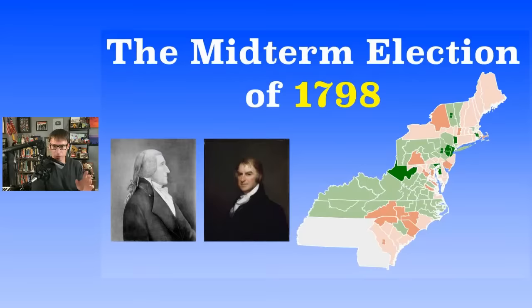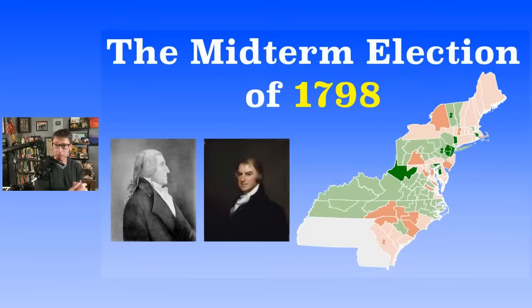In the Senate, there were 32 seats; 17 were needed for a majority. The Federalists actually gained one seat, so they had 23 after these elections, and the Democratic-Republicans lost a seat — they had nine. In the House, the Federalists won as well, gaining three seats; voter turnout seemed higher in New England. The Democratic-Republicans lost three seats.